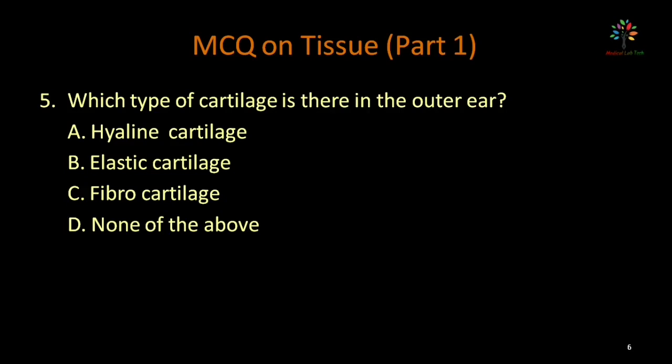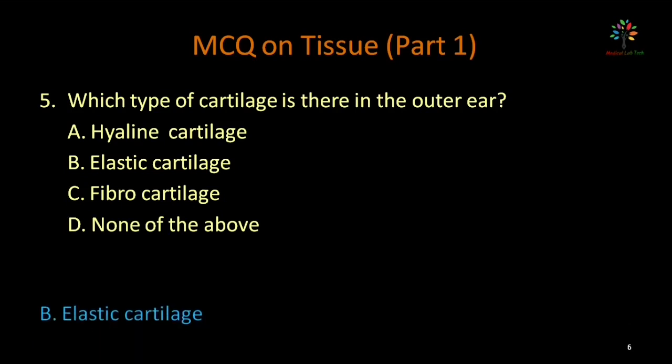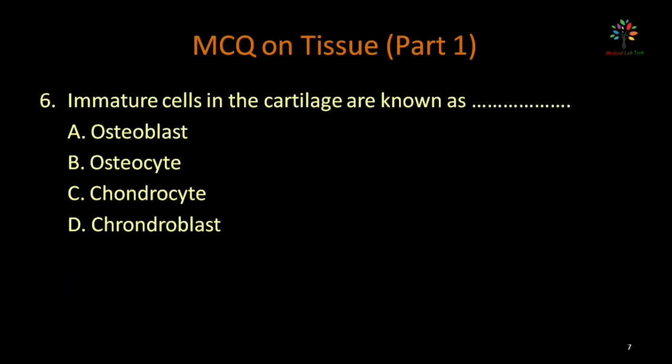Which type of cartilage is present in the outer ear? Options: hyaline cartilage, elastic cartilage, fibrocartilage, none of the above. The outer ear has elastic cartilage, which maintains the shape of the outer ear. Correct option is elastic cartilage.